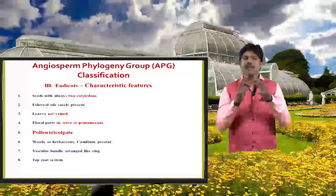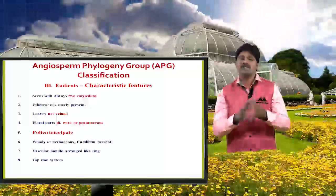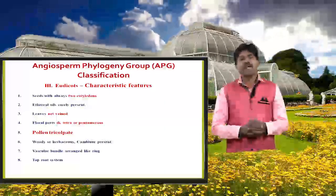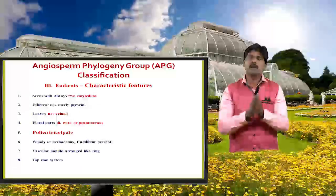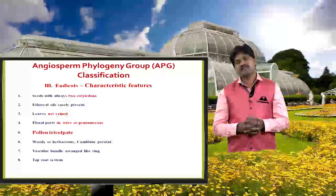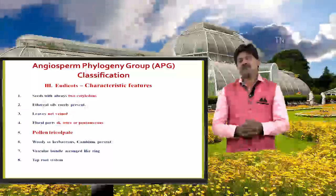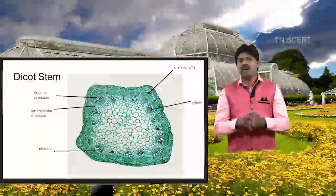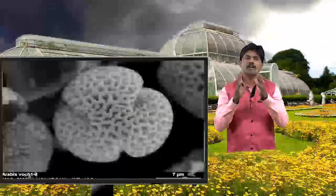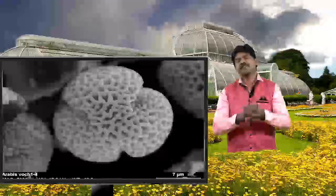The characteristic features of eudicots: two cotyledons, ethereal oil rarely present, reticulate venation. The flower type may be dimerous, tetramerous, or pentamerous. Cambium is present, so the plant may be woody or herbaceous. Vascular bundles are of open type, arranged in a ring. The pollen grain is tricolpate — the tricolpate pollen grain is a characteristic feature of eudicots.